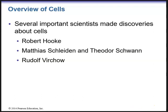So just a really quick overview — there are several very important scientists that actually made discoveries about cells. First we have Robert Hooke. Robert Hooke first observed plant cells with a very crude microscope in the late 1600s. Then we have Matthias Schleiden and Theodore Schwann, who in the 1830s boldly asserted that all living things are composed of cells.